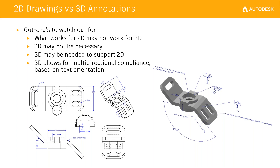3D allows for multi-directional compliance. If you have a surface that is supposed to be flat within a certain tolerance, flat in what direction? That's where the 3D can really clarify things. You can set the annotation plane to certain orientations and angles — for example, flatness of one thousandth of an inch in one planar direction and flatness of three thousandths of an inch in the other. That helps clarify design intent a lot of times.